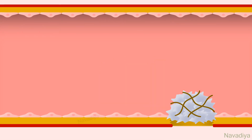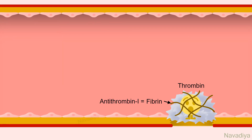Apart from these anticoagulant factors, fibrin formed during coagulation also helps in preventing clot formation at healthy sites indirectly. It absorbs thrombin molecules and thereby prevents their spreading into the remaining circulation. Because of this action, fibrin is also referred to as antithrombin-1.